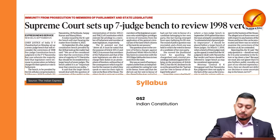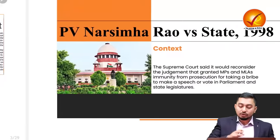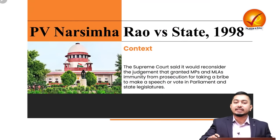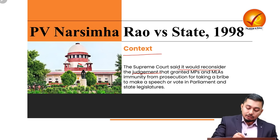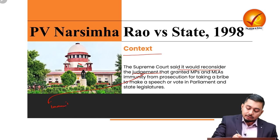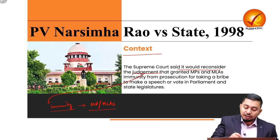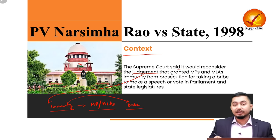The first article pertains to GS2 Indian Constitution. This is a very interesting case. The Supreme Court said that it would reconsider the judgment that granted immunity — immunity to MPs and MLAs from getting bribed or receiving bribes.